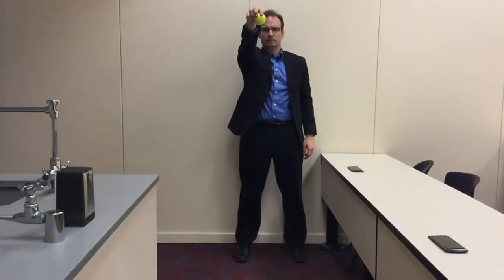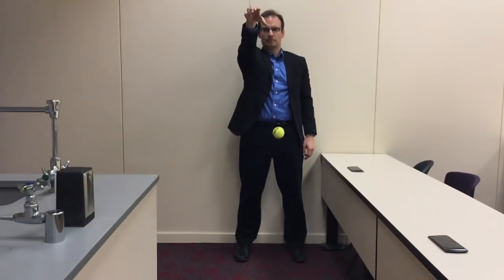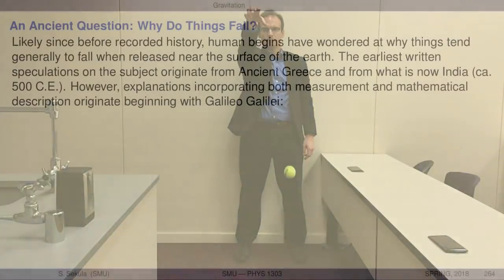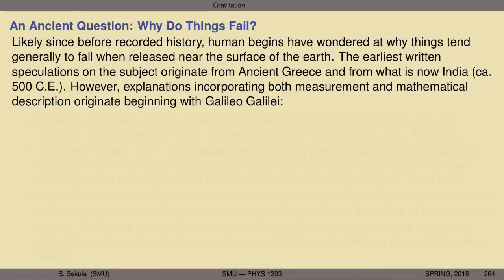Pick up a rock, hold it out, let it go — it falls down. Why does the rock never rise into the sky? The earliest written speculations on the subject originate from places like ancient Greece, or much later from what is now known as India, circa 500 years into the common era.